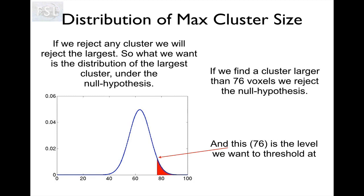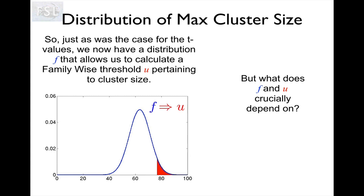This is the null distribution we are interested in. If you want to reject the null hypothesis based on cluster size, this is the distribution where we want the five percent level. For this particular case it was 76, so if we find a cluster somewhere in the brain — given a threshold of 2.3 — that is larger than 76 voxels, we reject the null hypothesis. Just as was the case for z-values, we now have a distribution F that allows us to calculate a family-wise threshold pertaining to cluster size. But what do F and this threshold crucially depend on?